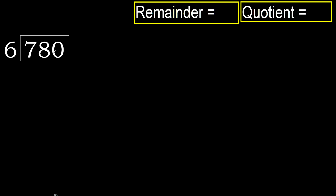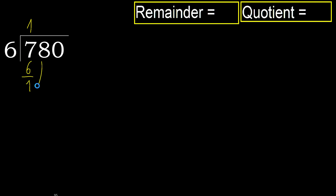780 divided by 6. 7 is not less, therefore we start with 7. 6 multiplied by which number is nearest to 7 but not greater? 6 multiplied by 2 is 12 — 12 is greater. Multiplied by 1 is 6, it is not greater. Subtract. Next.